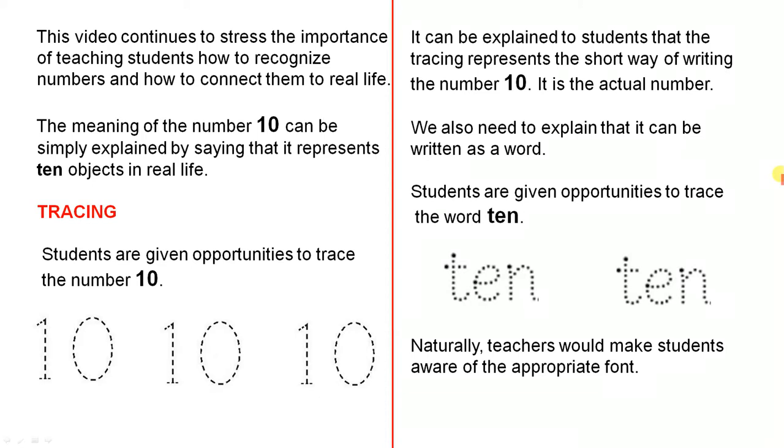Tracing is very important in kindergarten because it's closely related to fine motor skills, and we need to give students plenty of opportunities to do tracing. Students are given opportunities to trace the number 10, and these are just three examples. Students need to be given many more examples. The more they trace the number 10, the more likely they are to recognize it and remember what it looks like.